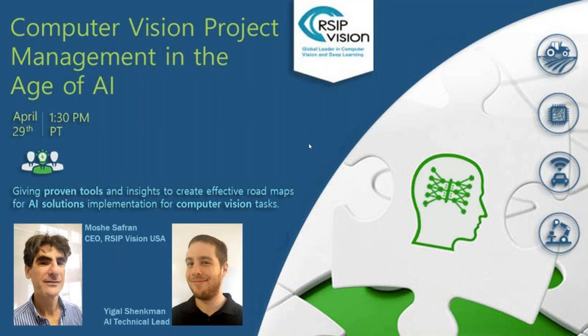Good afternoon, everyone. Thank you for attending this RCP webinar. Today we're going to talk about computer vision project management in the age of AI, and we hope to share some of our knowledge on how we go about managing these projects. My name is Moshe Safran, I'm the head of our U.S. activities, and I'll be hosting Igan Shankman, an experienced AI tech from our company.